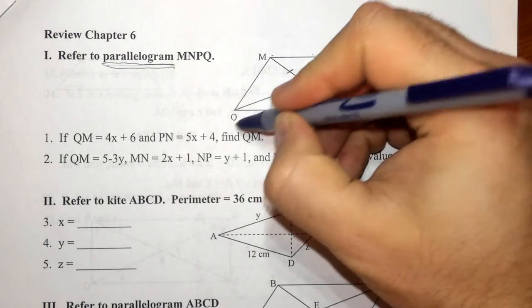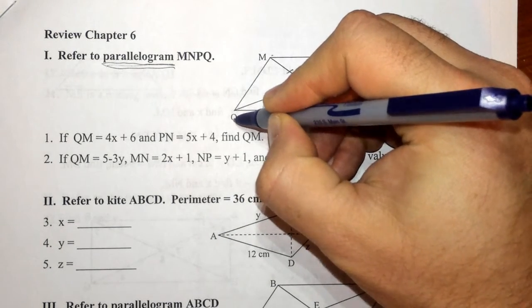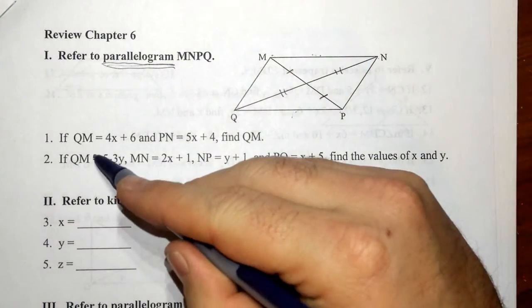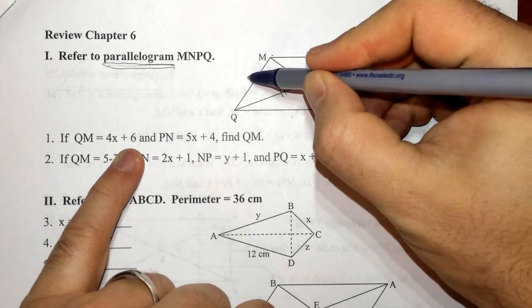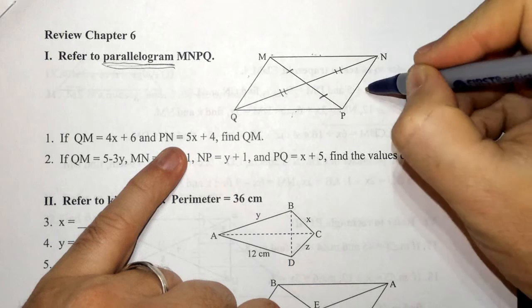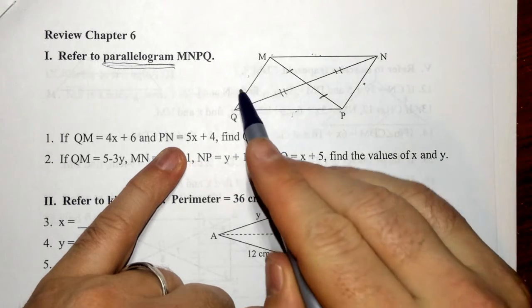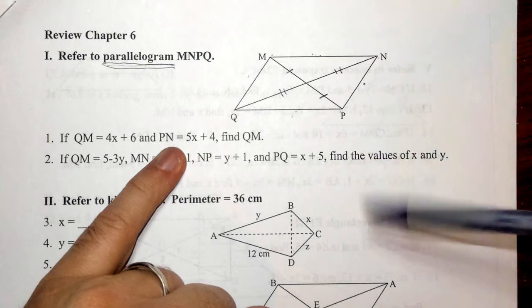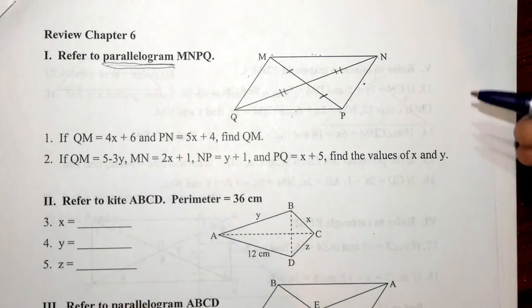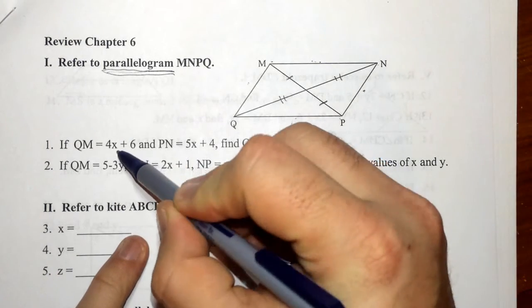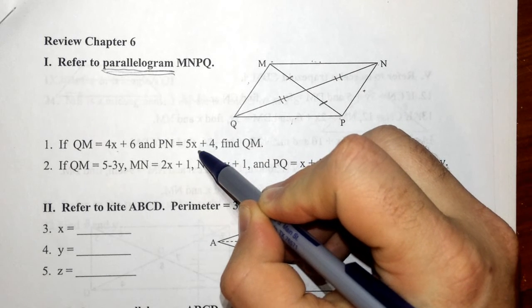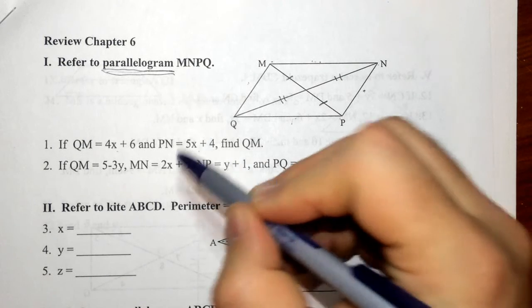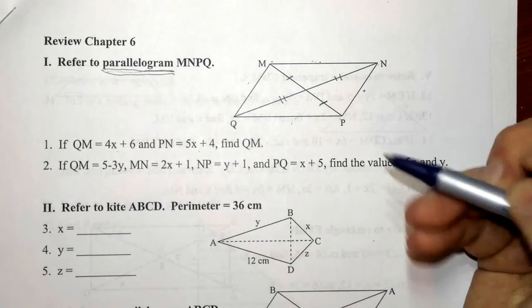It says that QM, and I'm going to go ahead and label that as a Q so I'll stop making that mistake. QM is 4X plus 6, so that's this side here, and PN over here is 5X plus 4. Well, opposite sides we know are congruent, so in order to solve for this, we're going to set QM equal to PN and then solve for X. Once I know my X value, I'm going to substitute in to QM to find my final answer.